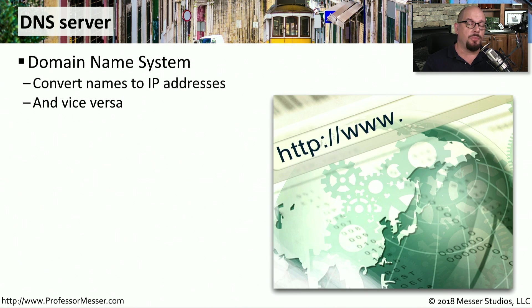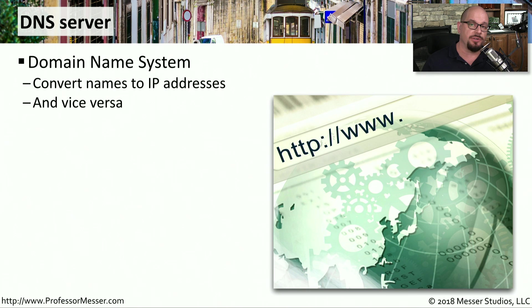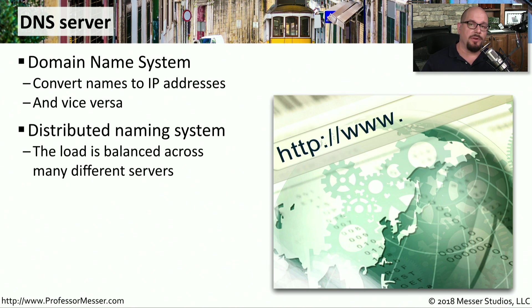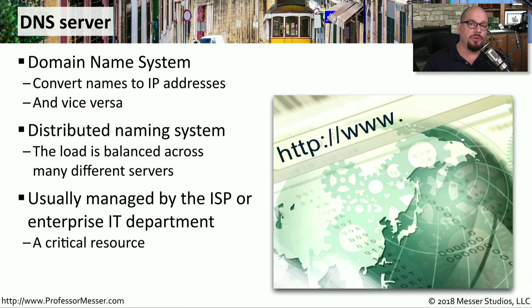If you visited a website, you probably didn't type in the IP address — you typed in something like www.professormesser.com. Something needed to translate between the name of the site and the IP address used to communicate across the internet. That conversion occurs on a DNS server — a Domain Name System server. DNS is a very distributed system with thousands of DNS servers on the internet. At home you're likely using a DNS server at your ISP; in an organization, you probably run your own DNS servers in your data center.